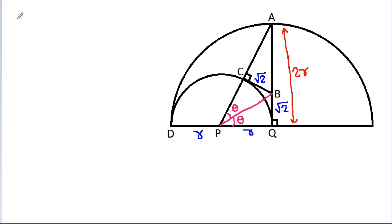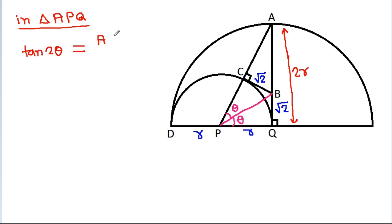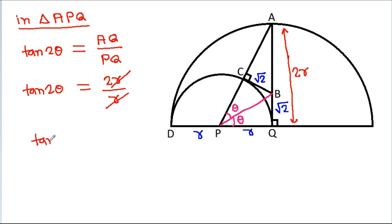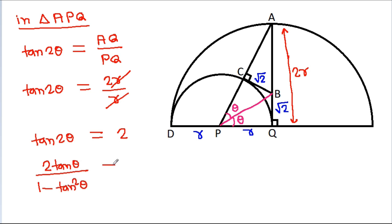In triangle APQ, tan 2θ equals AQ divided by PQ. Since AQ is 2r and PQ is r, the r cancels and tan 2θ equals 2. Applying the double angle formula: tan 2θ = 2 tan θ / (1 − tan²θ) = 2, and dividing both sides by 2 gives tan θ / (1 − tan²θ) = 1.